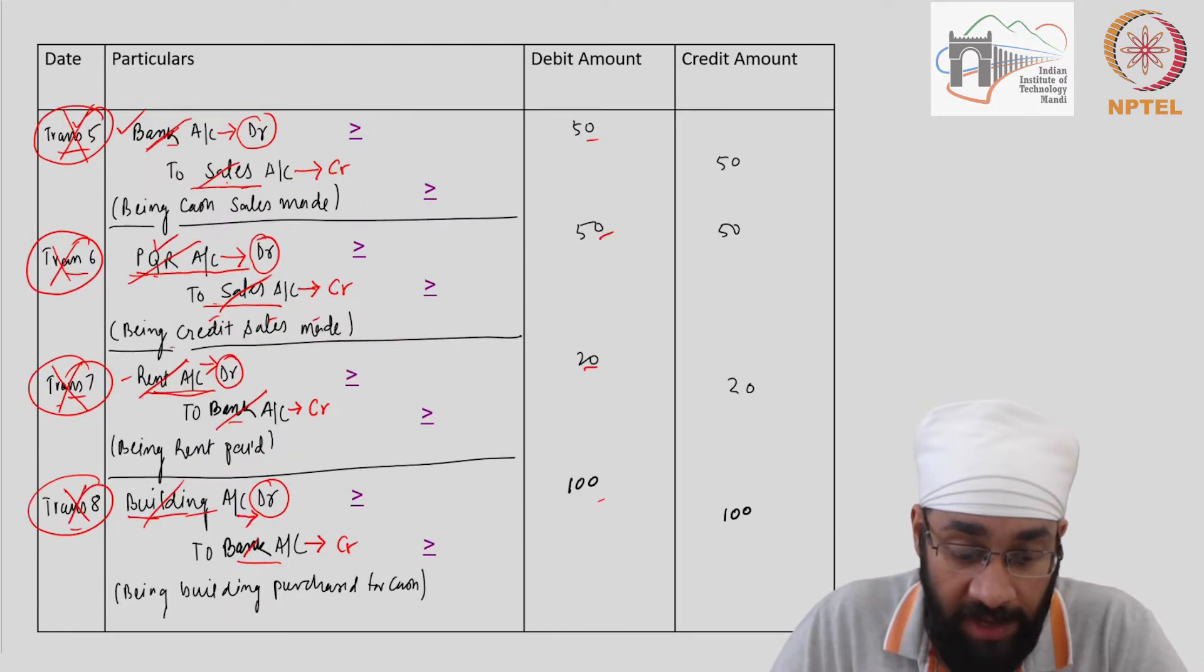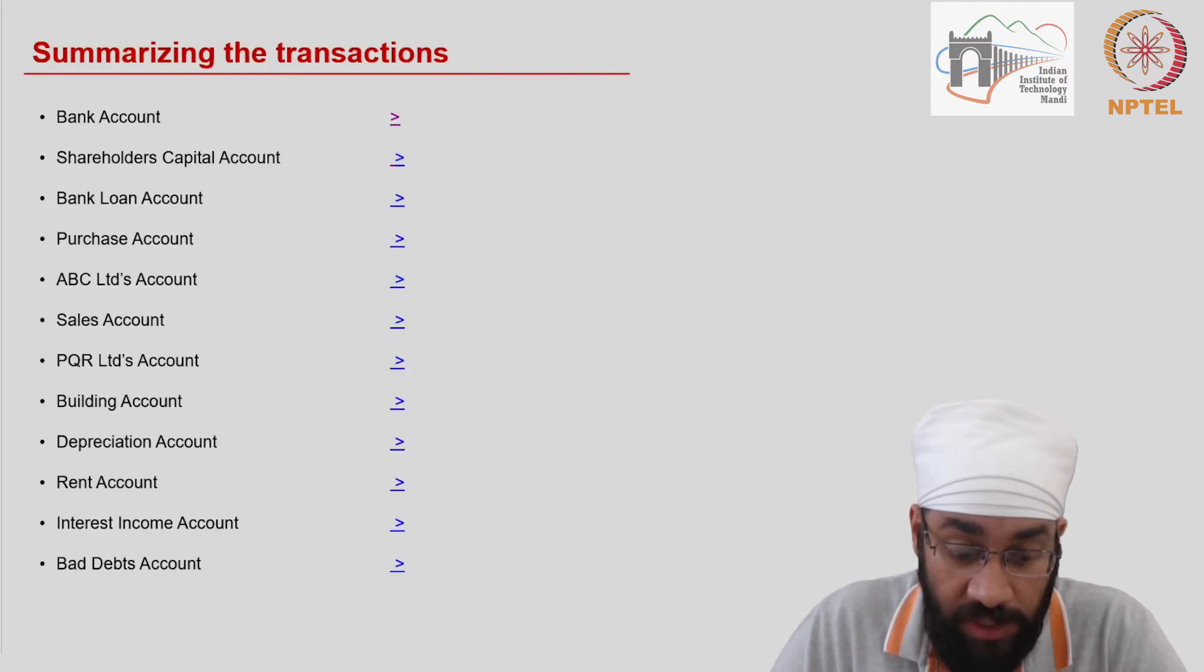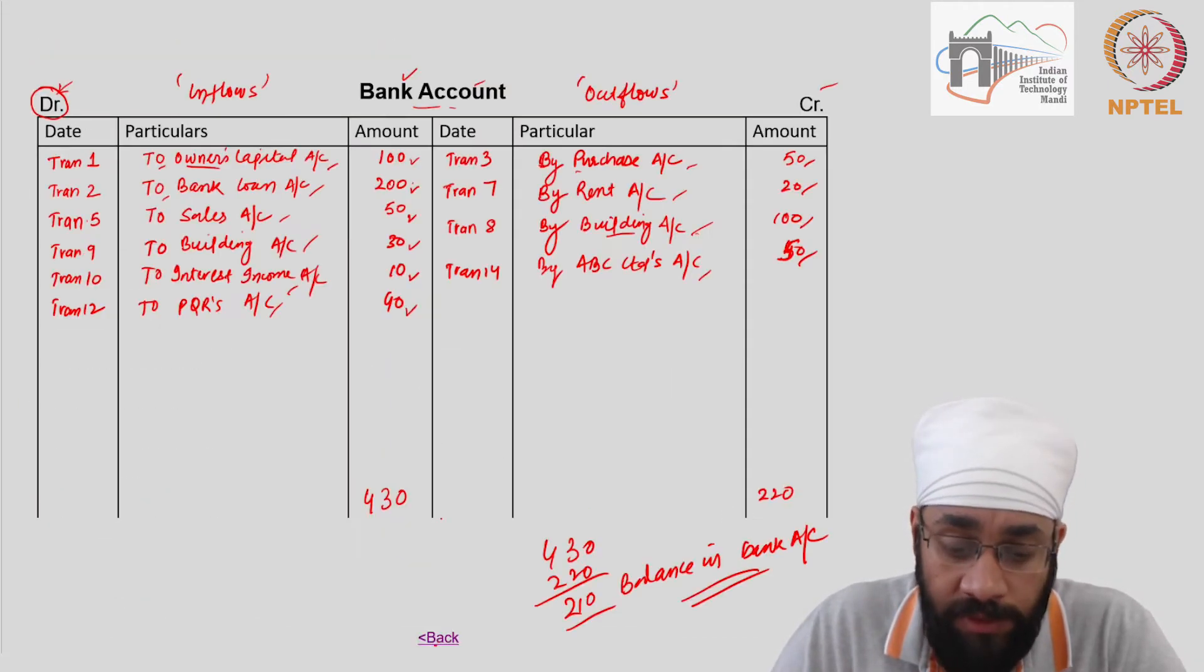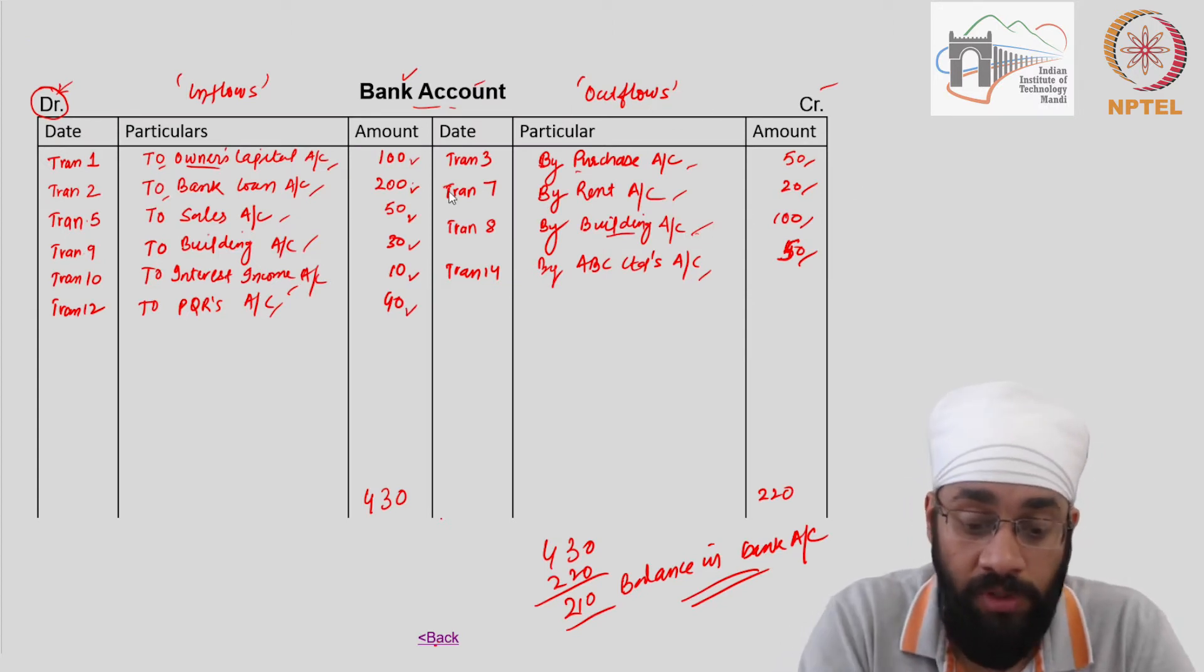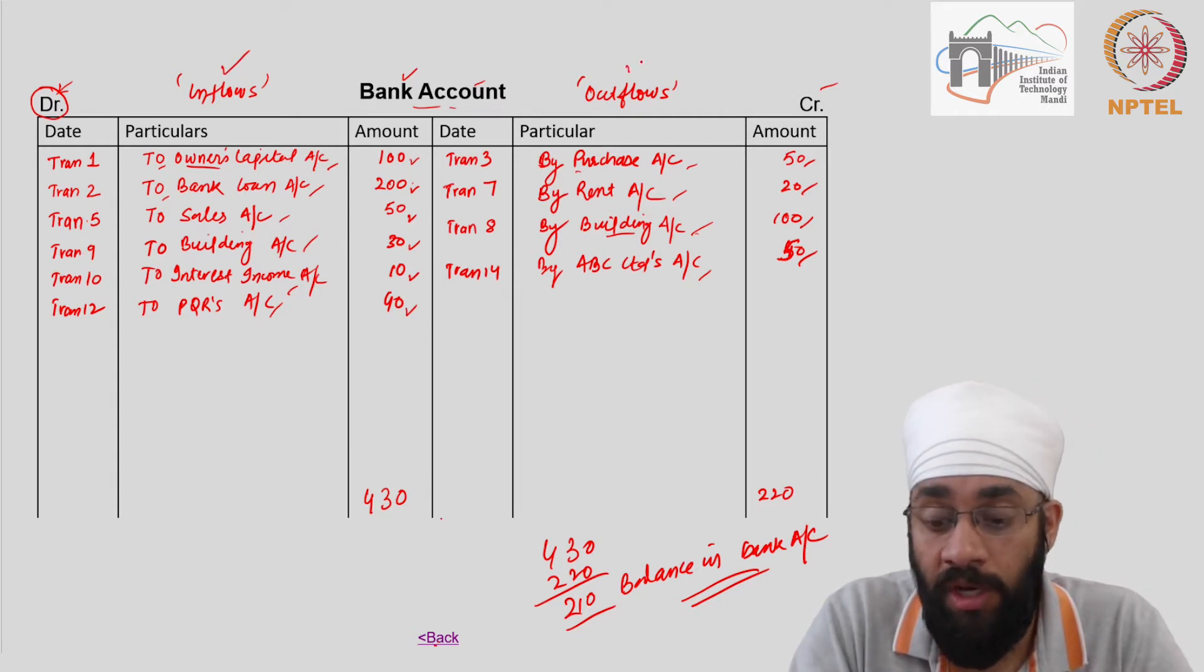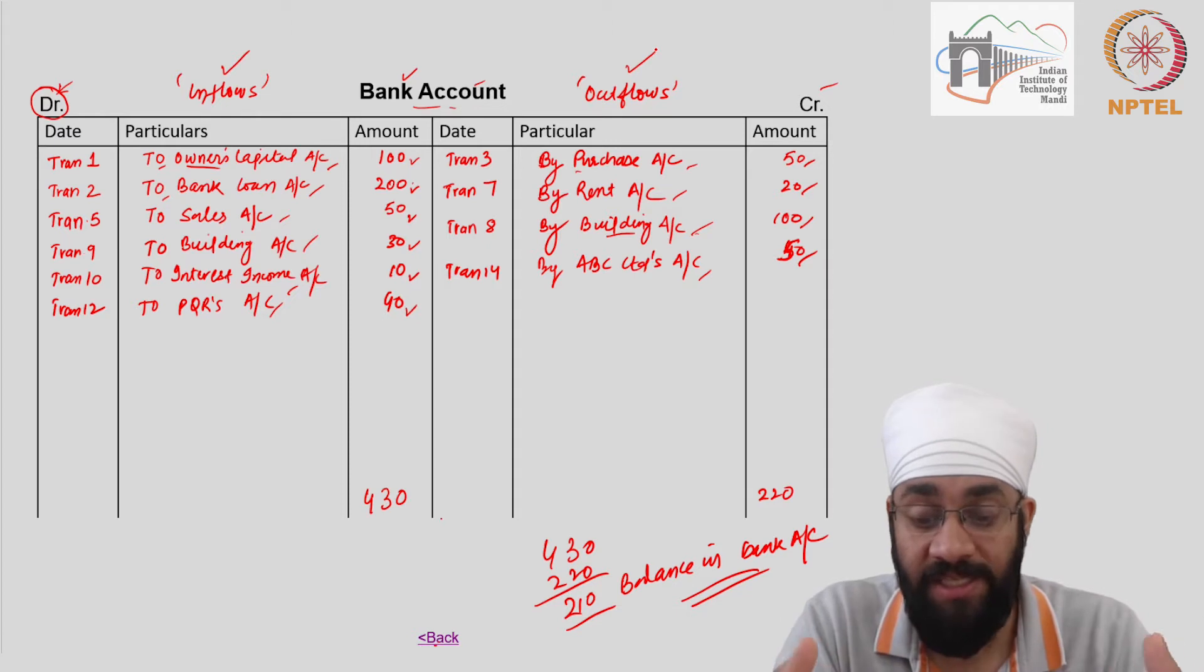So we have posted all these transactions in all the accounts and earlier we discussed how the bank account on one side shows you all the inflows, on the other side shows you all the outflows, and it makes it easy for you to figure out what is the balance in the bank account at the end of these 14 transactions.